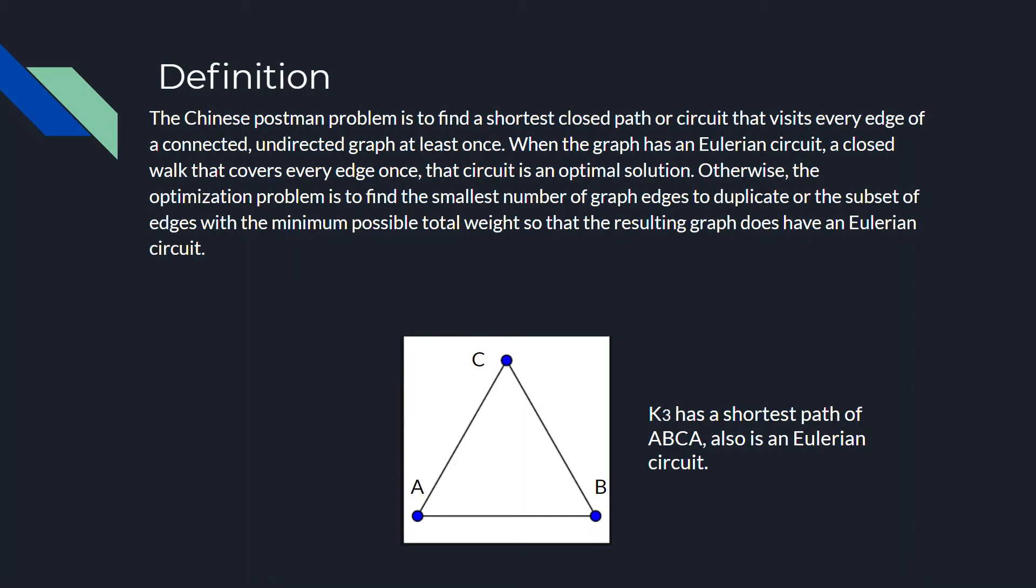And we'll get more into that in future slides. But as an example, the graph shown here, K3, has a shortest path of A, B, C, back to A, which is an Eulerian circuit, and essentially solves our postman problem, which is when the postmaster has to start from the post office.